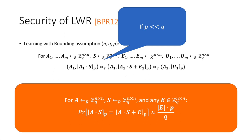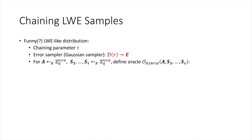This is where our new idea of chaining comes in. As a thought experiment, we modify the LWE distribution using a positive integer tau, which we call the chaining parameter. We also make use of an explicit, deterministic error sampler that takes a uniform seed R and deterministically produces a noise matrix E. We define a hybrid oracle that takes a uniformly random square matrix A and a set of uniformly random square matrices S1 through S_tau.